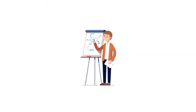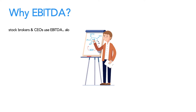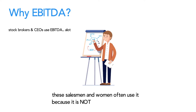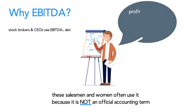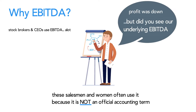So why do people use EBITDA? It's a common measure you'll find in a CEO's presentation or a stockbroker's investment documents. These salesmen and saleswomen often use EBITDA because it is not an official accounting term, so they might include things that make the results look better than expected. They often call it underlying EBITDA or normalized EBITDA.